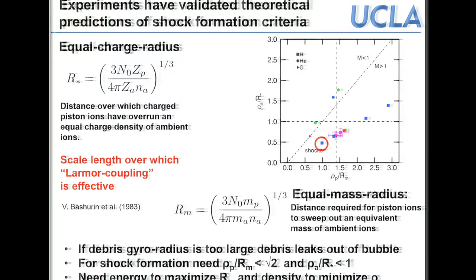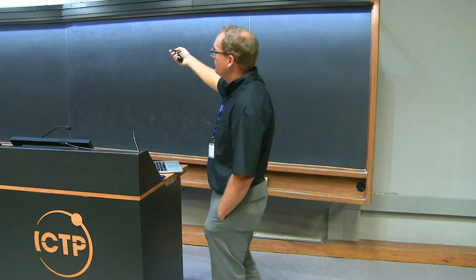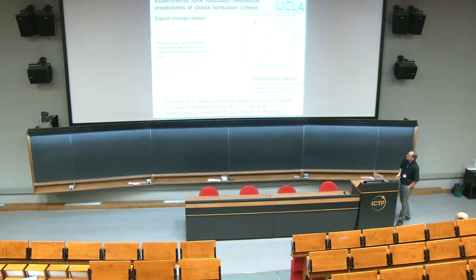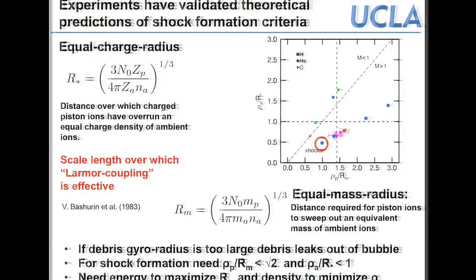Going to neon or argon raises the Alfvén speed, making it seemingly easier to drive shocks — however the ambient ions would not be magnetized. That's where the second term comes in: the equal-charge radius, the distance over which the piston ions have overrun an equal charge density, which is essentially the length over which Lorentz coupling is effective. For protons exploding into hydrogen these two scale lengths are the same, but for heavier ambient masses the equal-charge radius decreases. Both the debris and the ambient must be magnetized.